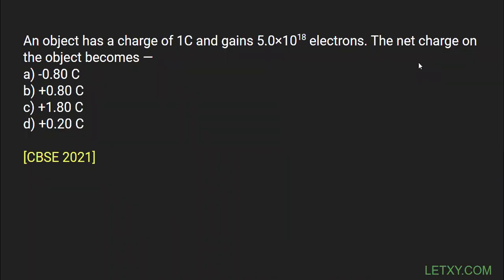Hello everyone, here we have another question. First, let's read it out: an object has a charge of one coulomb and gains 5 into 10 to the power 18 electrons. The net charge on the object becomes — so first of all we have to find out the total charge.